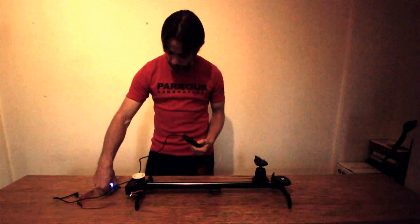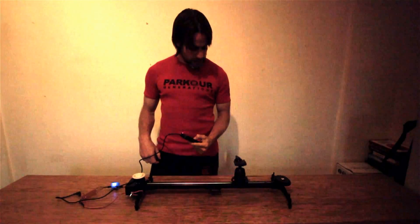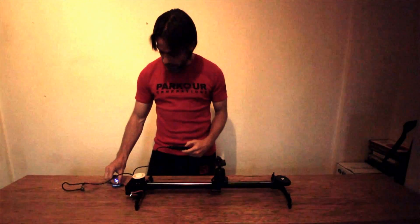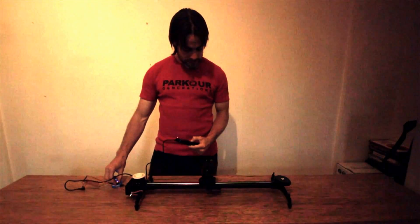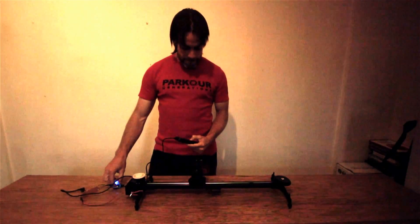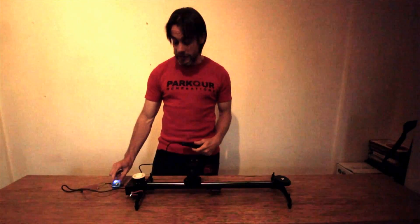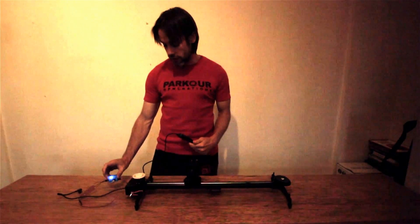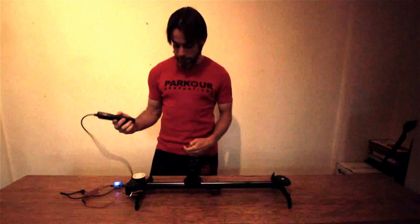I turn the dial on the servo controller all the way the other way, and that's the whole way the other way. You can slow it right down. Basically any settings, speed and direction can be done on the servo controller down here, and then you can activate it using the controller up here.